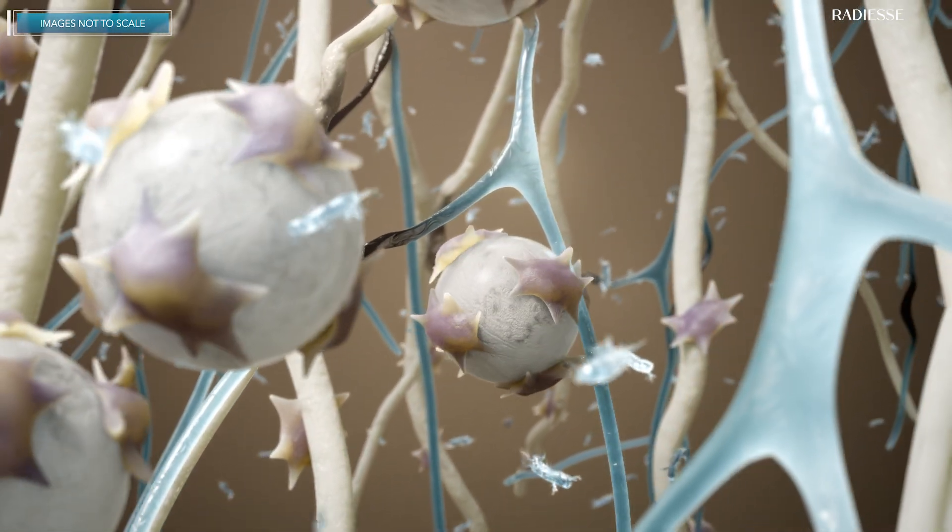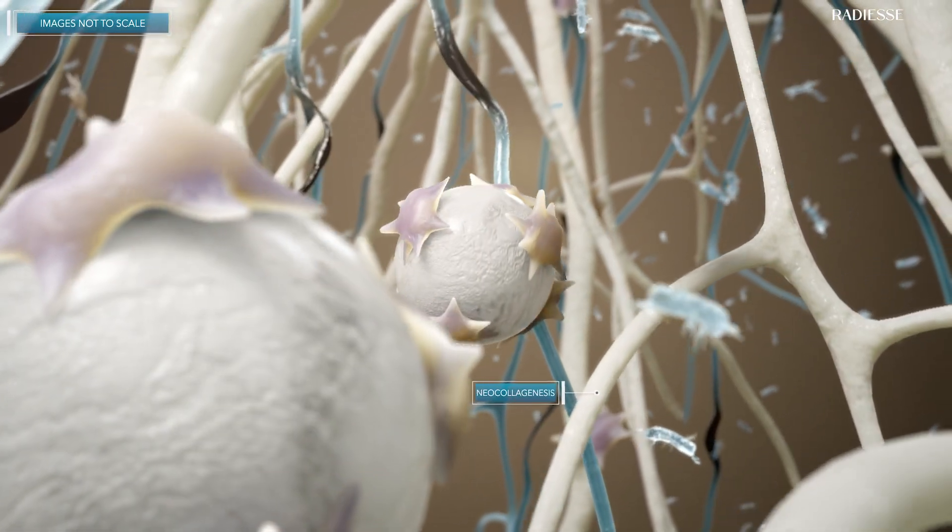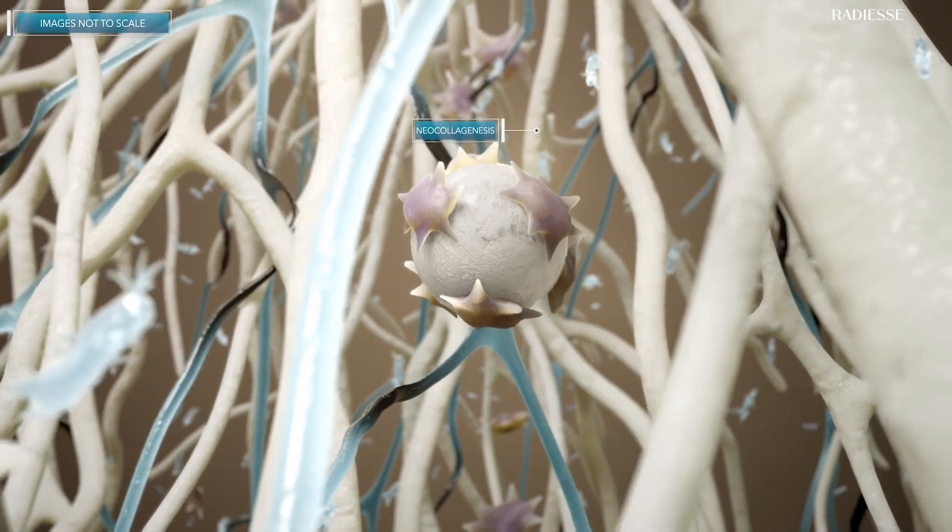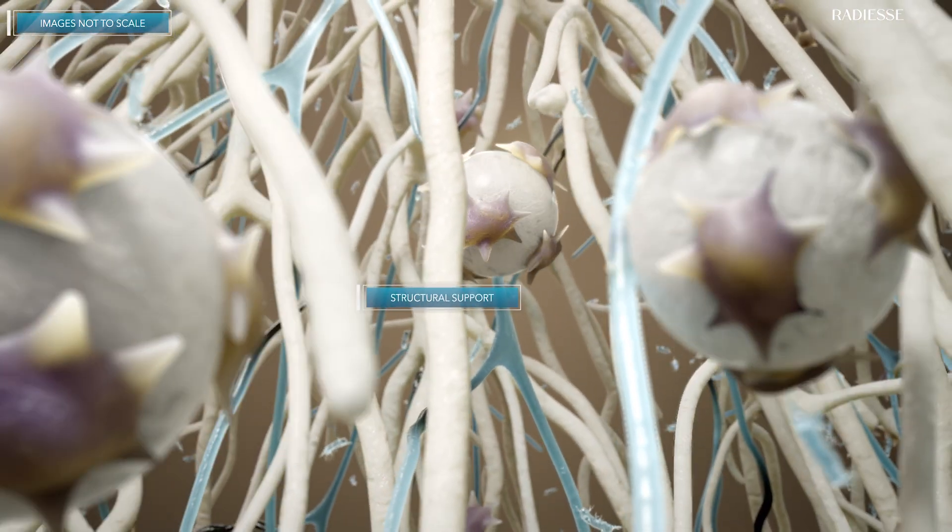Collagen 3 is produced, providing structural stabilization, and is replaced by collagen 1 over time. Collagen 3 ensures collagen 1 is aligned and mechanically robust, providing long-term structural support and stability.